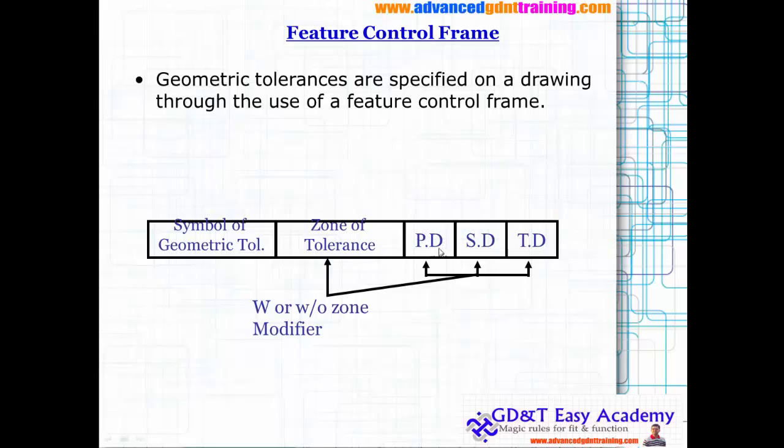This is the primary datum, secondary datum, and tertiary datum. With or without the zone modifier, you can see the use of the various feature control frame symbols.